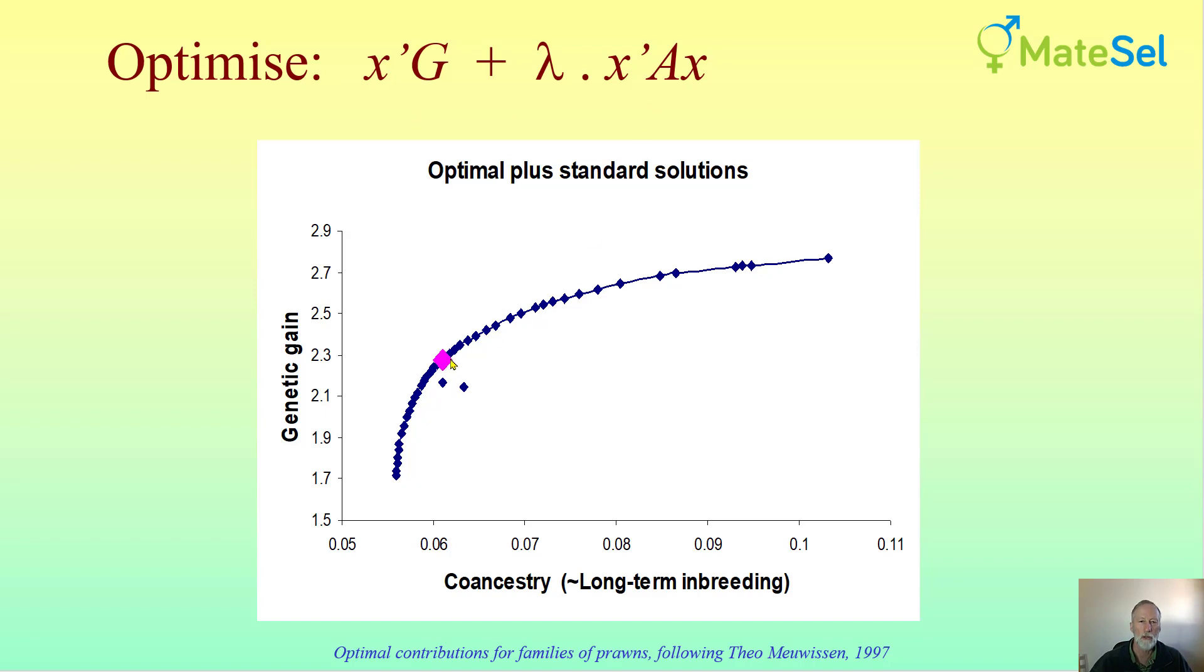And as is often the case when using these approaches we get a better result when we use this sort of approach for optimal contributions and this means that we have the ability to use better individuals, allocate them more mates than we otherwise would do and compensation for doing that is found in other parts of the breeding program to manage diversity and the end result is you get a better combination of both genetic gain and co-ancestry. It's definitely worth doing.